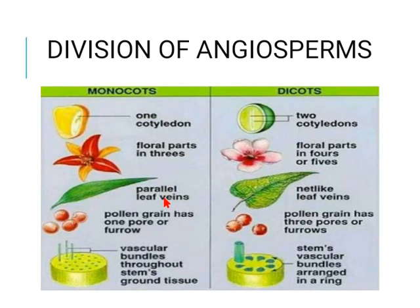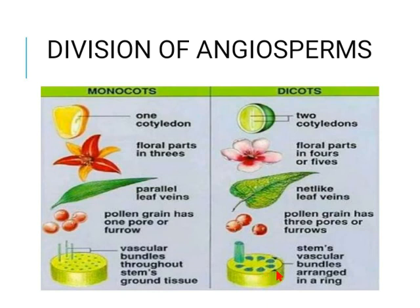You will also find differences in venation: monocotyledons have parallel venation, while dicotyledons have net-like venation. Pollen grains in monocots have one pore or furrow, while in dicots they have three pores. Vascular bundles are scattered in monocotyledons, whereas in dicotyledons they are arranged in the form of a ring. These are the key differences between monocotyledons and dicotyledons.